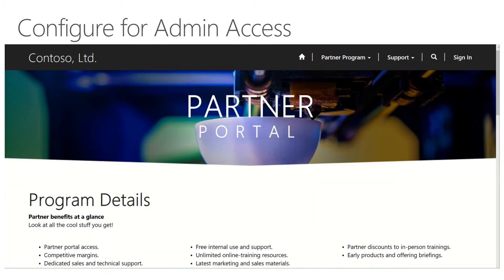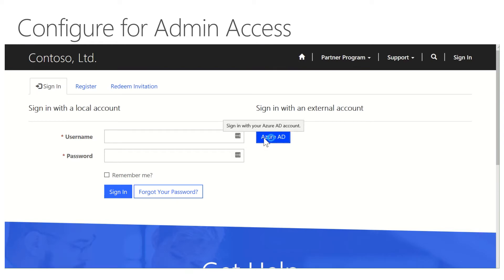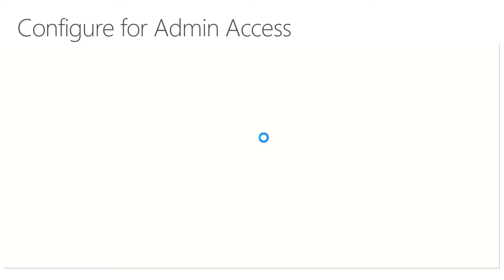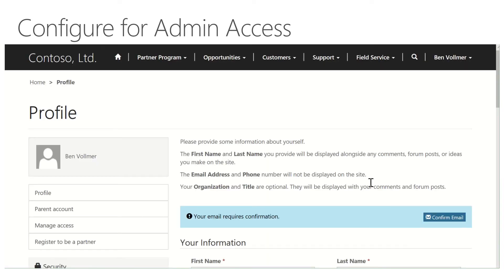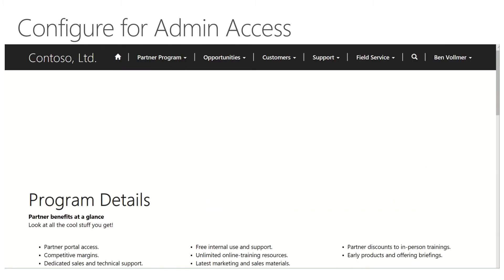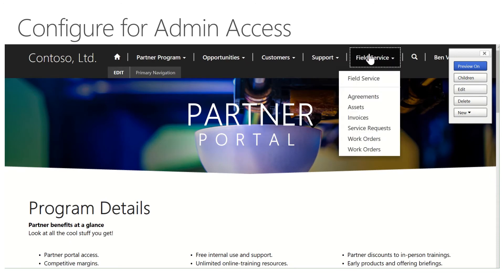We're going to go to the portal now and log in as an admin. Here I am in the portal — you can see there's really nothing up here. I'm going to click Sign In. Once I sign in, I'll click Azure Active Directory. I now am the administrator, so I have the ability to edit the pages. You'll see that field service now pulls up as a list of what I have available to me.